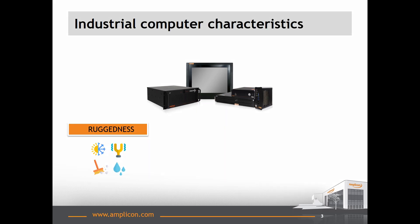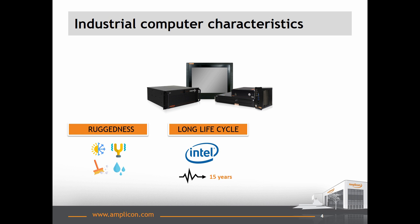They offer long-term availability. You'll find that most industrial PCs come with a 10-15 year roadmap depending on the CPU manufacturer. And also, they deliver high reliability. Industrial PCs can run 24-7 and offer excellent uptime performance. Here at Amplicon, our computers have an unbeatable 0.02% failure rate. For all these reasons, commercial grade computers are not suitable for industrial projects or applications.